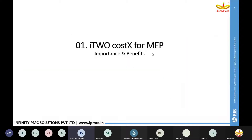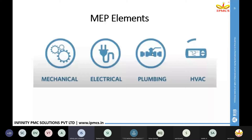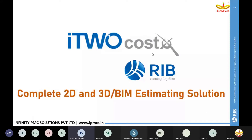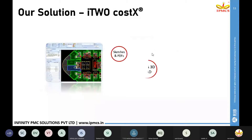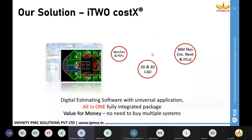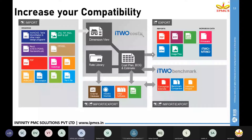First, we are going to see how I2 Costex will be helpful and the benefits of using I2 Costex for an MEP project. MEP elements cover mechanical, electrical, plumbing and HVAC elements. Today we will see how all four drawing types can be used for quantity takeoff in a single project in I2 Costex. I2 Costex is a product of RIB — a complete 2D and 3D BIM estimating solution, an all-in-one single integrated platform for project estimation.